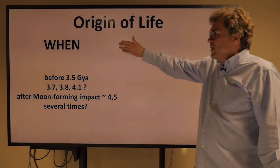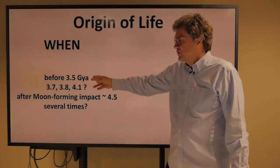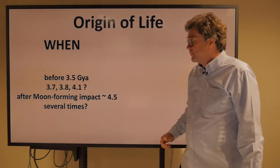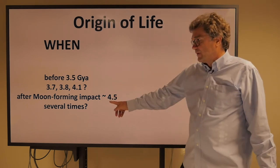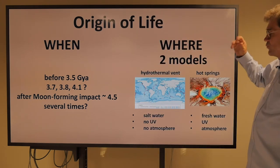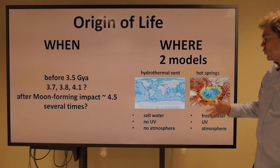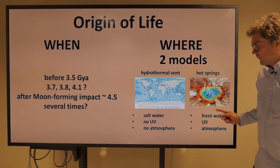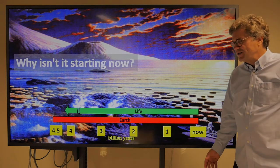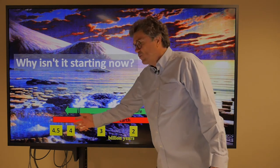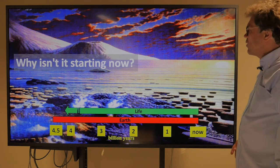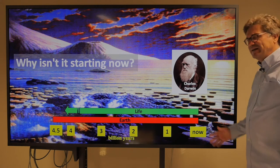So, the origin of life: when was it? It was before 3.5 billion years ago — maybe 3.7, maybe 3.8, maybe 4.1 billion years ago, depending on how seriously you take the isotopic evidence. In any case, it was probably after the moon-forming impact at about 4.5 billion years ago. Maybe life occurred several times, not just once. Where did it happen? There are two models: hydrothermal vents at the bottom of the oceans, or at the surface in hot springs. Why isn't life starting now?